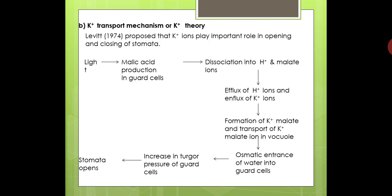The second theory is the potassium transport mechanism, or potassium pump theory, put forth by Leavitt in 1974. According to this theory, potassium ions play an important role in opening and closing of stomata. The opening and closing depends upon the active transport of potassium ions into and out of the guard cells. The potassium ions are stored in the subsidiary cells, which act as potassium ion storage cells for the guard cells.